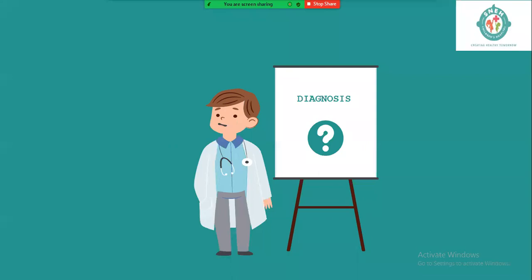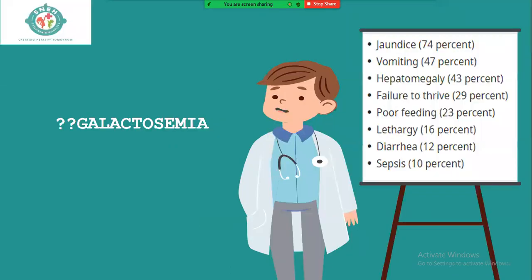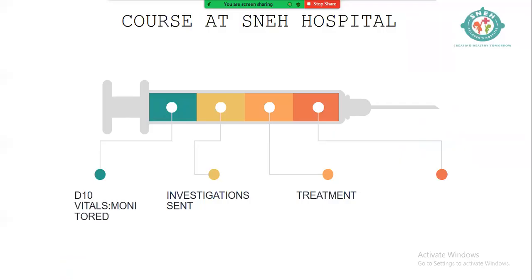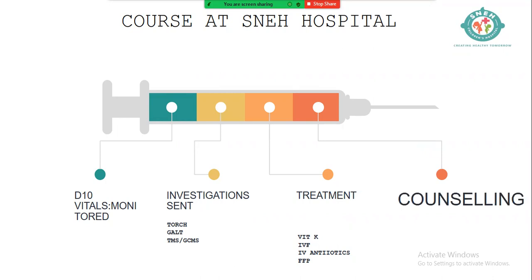Galactosemia was coming up as a key differential. Features — jaundice, vomiting, hepatomegaly, failure to thrive, poor feeding, lethargy — matched this child's presentation. As the clinical condition deteriorated, we sent GALT enzyme levels. Meanwhile, TMS and GC-MS were also sent, and FFP was given again. Counseling was increasingly difficult as the diagnosis remained elusive and the child's condition continued to worsen.